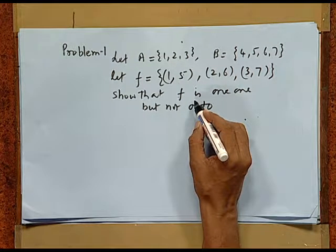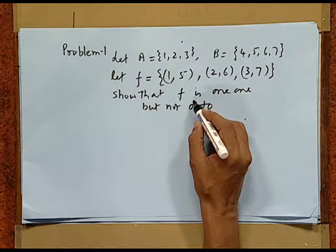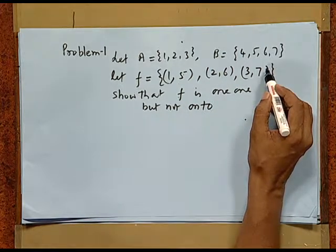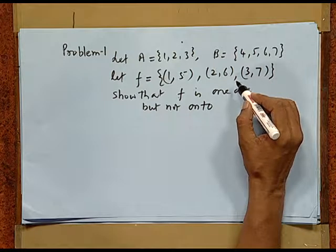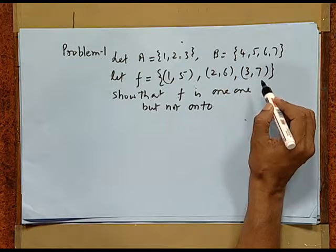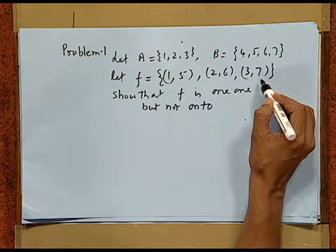Now let us take a problem. Given that A is the set {1, 2, 3}, B is the set {4, 5, 6, 7}, and f is given to be {(1,5), (2,6), (3,7)}, we have to show that f is one-one but not onto. In this problem, the function is given using ordered pairs. Whenever a function is given in this form, the first element belongs to the domain and the second element belongs to the codomain.